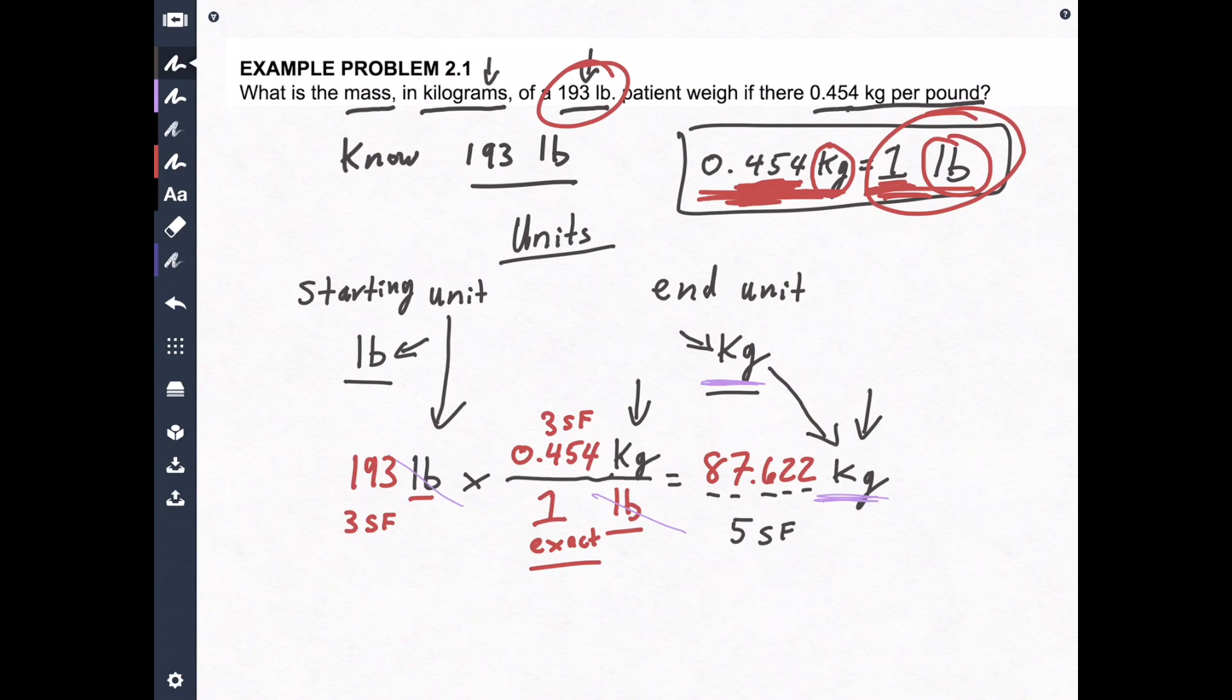So this is my third significant figure. And there's my number I need to consider, the two. The two does not change the six at all. So the final answer is 87.6 kilograms. There you go. And I put a square around my final answer because it just makes it easier for whoever's grading it to know your final answer.